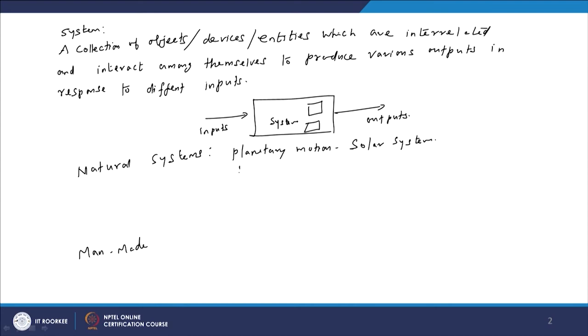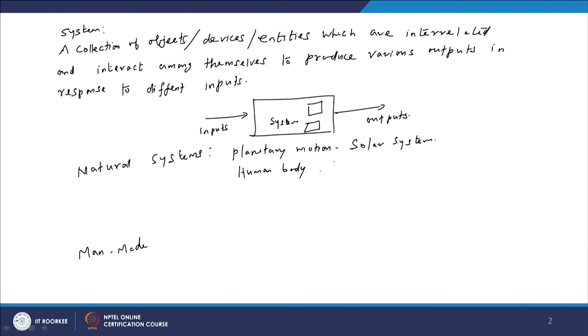Similarly, the human body is a system with several organs as subsystems, and any action by a human body can be called an output in response to the input which is given by the brain. So there is an input-output relation for the human body, which is a natural system.